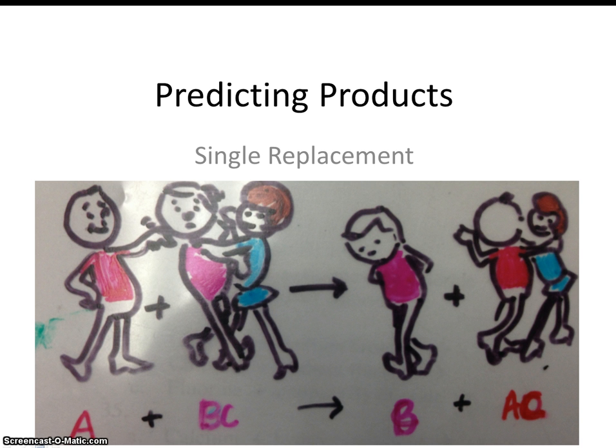Once again this cartoon should help us along the way. So notice what we have here. This is a guy who is by himself, we'll just call him guy A. And we also have a couple, couple BC.